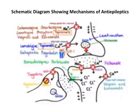This schematic diagram shows the mechanisms of different antiepileptic medications. As you can see, sodium channels are blocked by various antiepileptics: carbamazepine, lamotrigine, phenytoin, topiramate, valproic acid, and zonisamide. On the other hand, high voltage-gated calcium channels are inhibited by lamotrigine and topiramate.